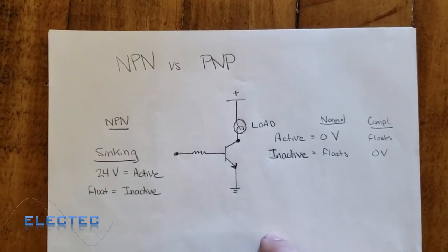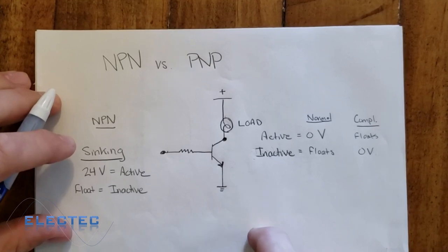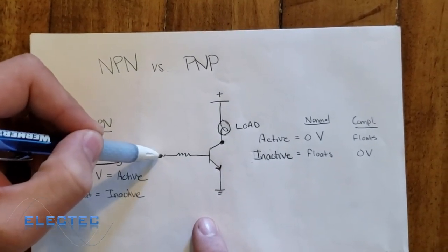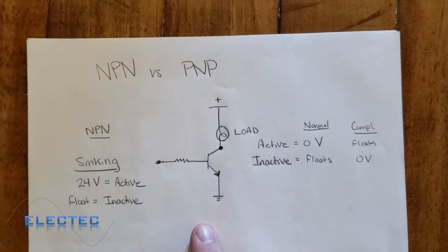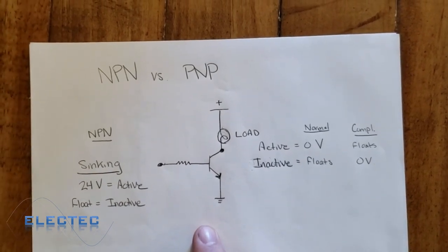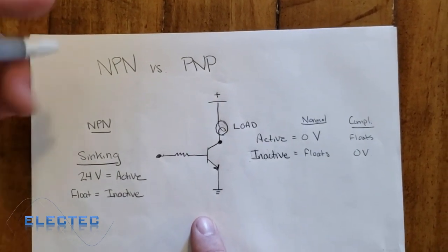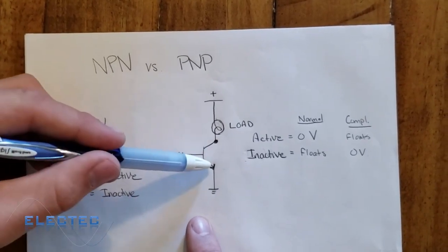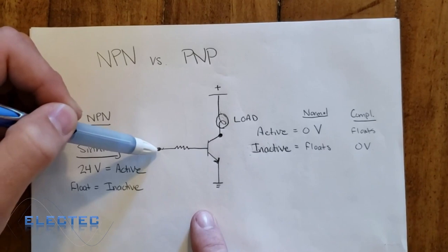It helps you understand the inputs and the outputs. On the input of this circuit, on this NPN circuit, what we have to do is we provide the source. Source and sink, they work with one another. In order to utilize an NPN transistor or to activate the NPN transistor, we have to source it.